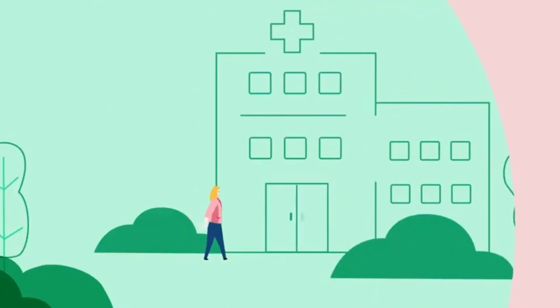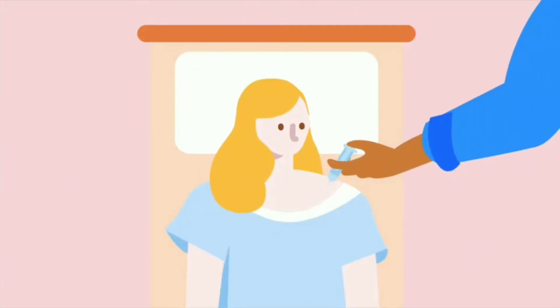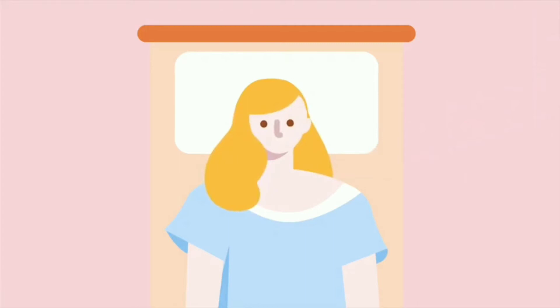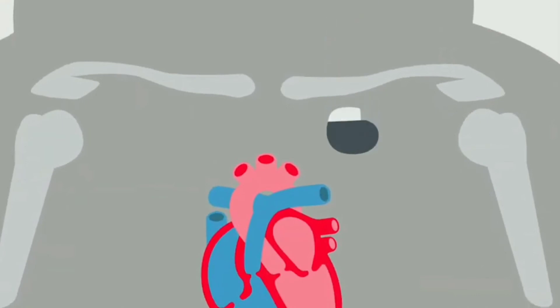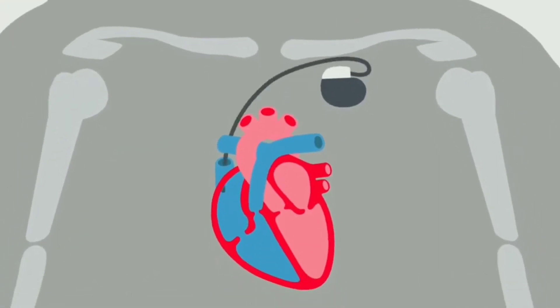Julie is about to get a pacemaker fitted and is understandably nervous about the whole thing. She is given a local anaesthetic, so is awake during the procedure and notices some mild discomfort but feels relaxed throughout. It takes around an hour, where the pacemaker is inserted under her collarbone and leads are placed into her heart through a vein.